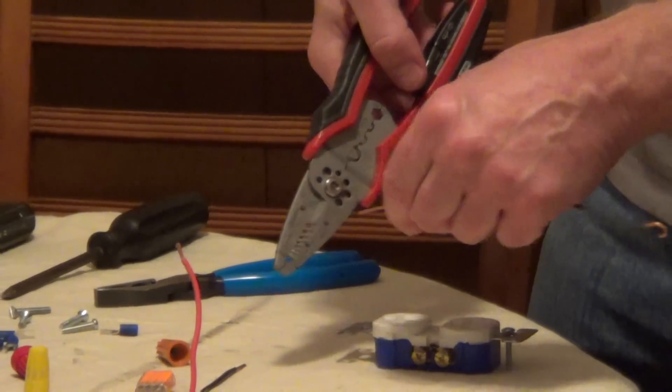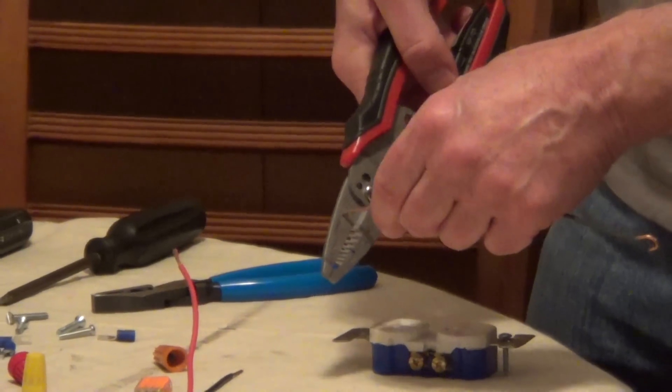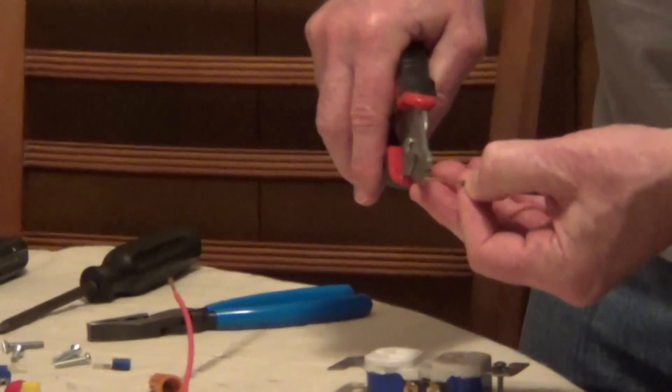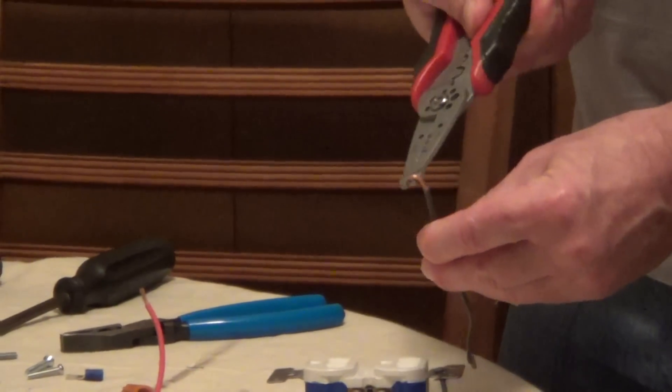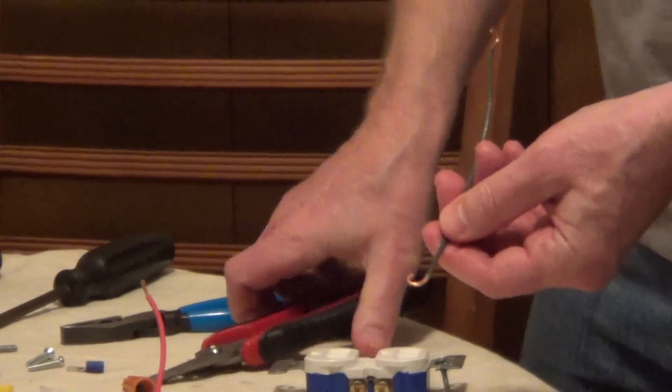So you can either use the little looping stations, these little holes on the side to put a loop in it, or you can just grab it with the end of the stripper and put a hook like that.